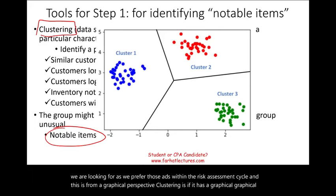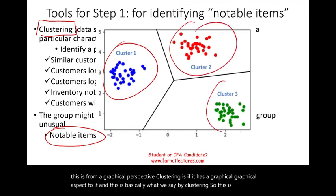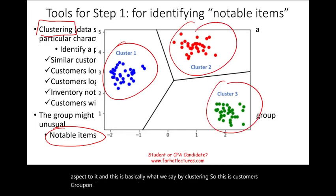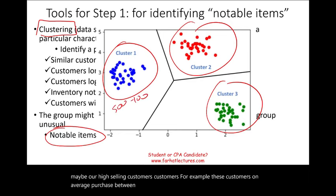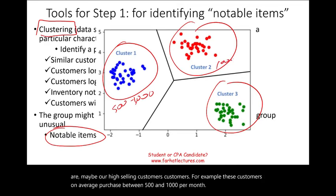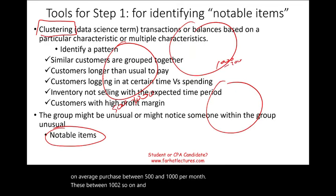This is basically what we mean by clustering: customers group one, customers group two, customer group three — maybe our highest-selling customers. For example, these customers on average purchase between $500 and $1,000 per month, these between $1,000 and $2,000, and so on. We're clustering.